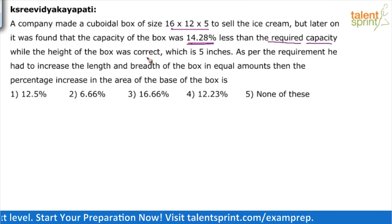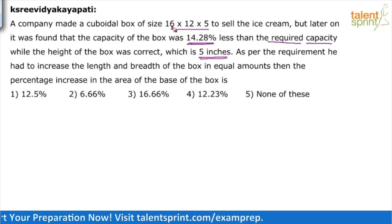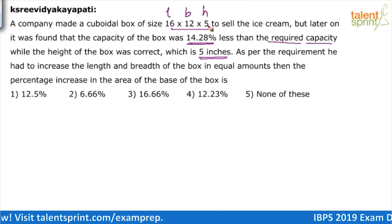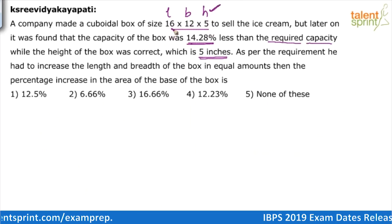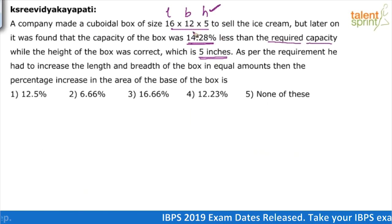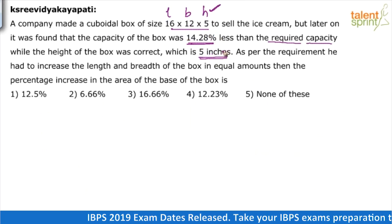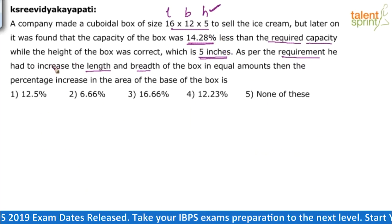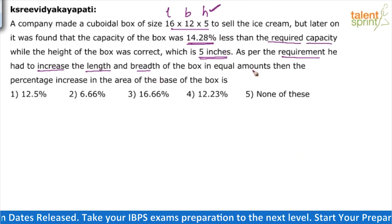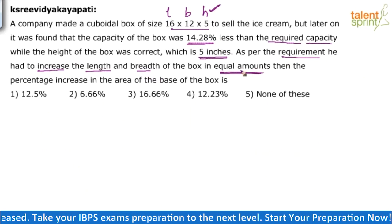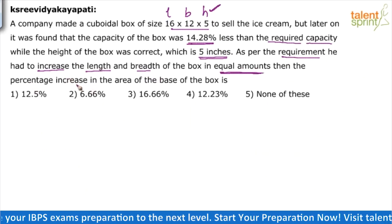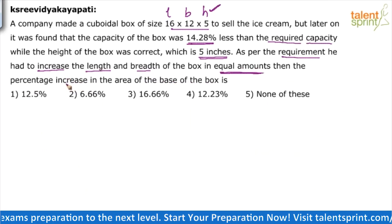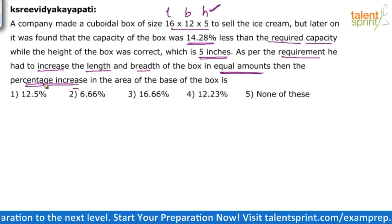The height of the box — 5 inches — was correct. Out of 16, 12, and 5 (length × breadth × height), the height is correct but something went wrong in the length and breadth, which caused the volume to be 14.28% less. As per the requirement, he had to increase both length and breadth in equal amounts. The question asks: what is the percentage increase in the area of the base of the box?